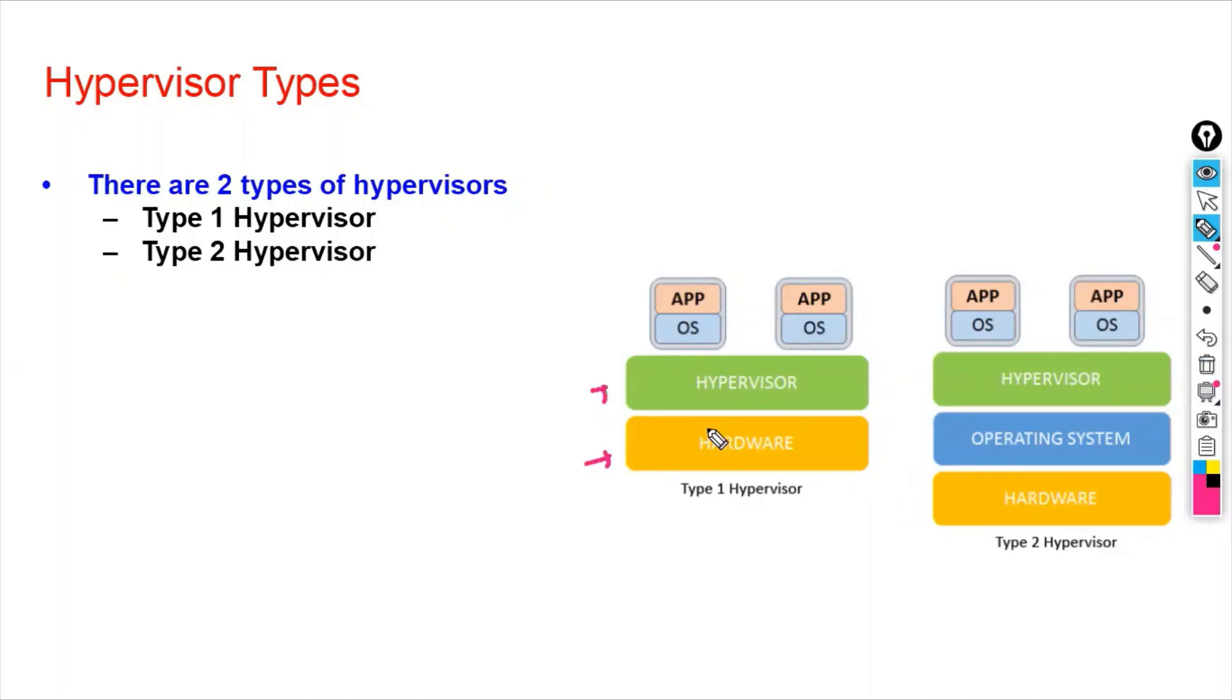So type 1 hypervisor will run directly on the hardware. Type 2 hypervisor will run on the operating system like Windows 10, Windows Server 2022.